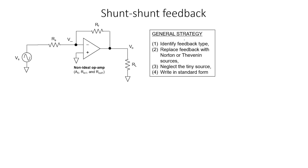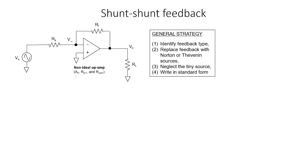I'd like to now look at a practical example of an amplifier in the shunt-shunt configuration. In particular, we're going to look at an op-amp, but we're going to assume that the op-amp is non-ideal — in other words, it has a non-infinite internal gain, a non-infinite internal impedance, and a non-zero output impedance. The general strategy for analyzing this circuit is outlined in the box. We're first going to identify the feedback type, replace the feedback network with equivalent sources, neglect sources that don't matter, and then try to write the circuit in standard form. This will make sense once we do the example.